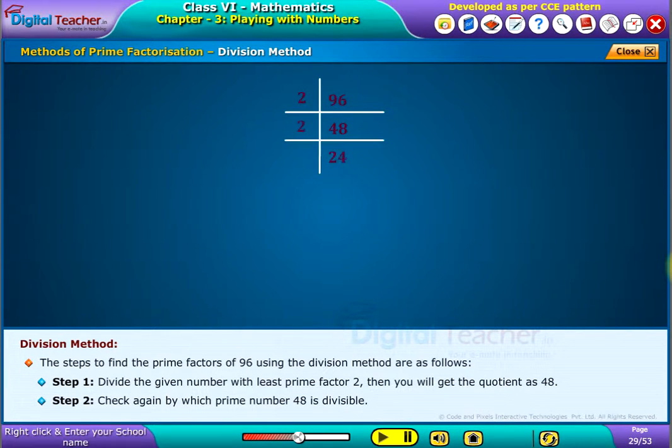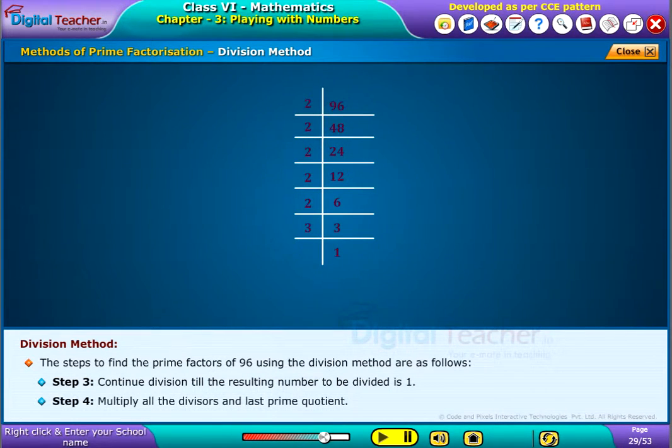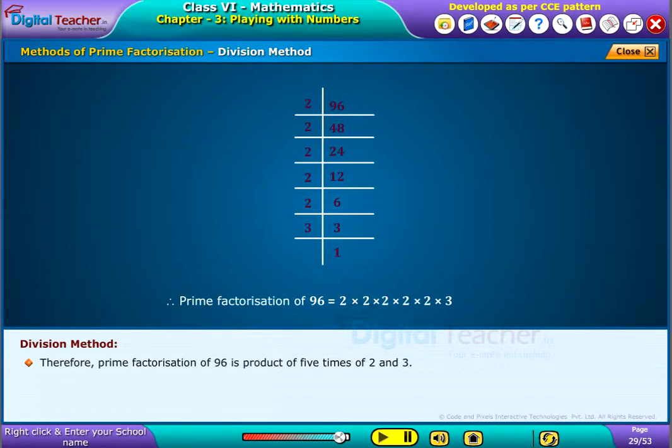Step 3: Continue division till the resulting number to be divided is 1. Step 4: Multiply all the divisions and last prime quotient. Therefore, prime factorization of 96 is the product of five times of 2 and 3.